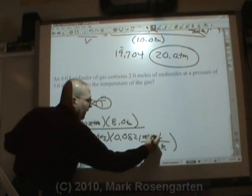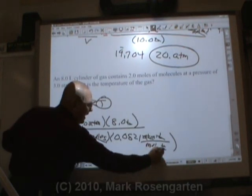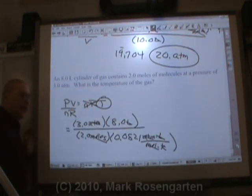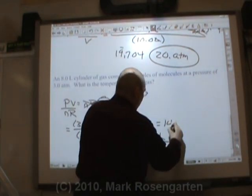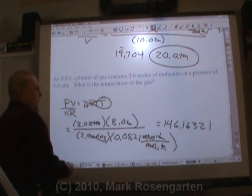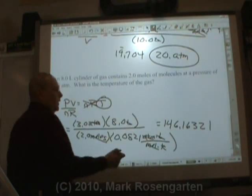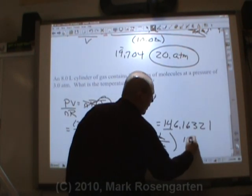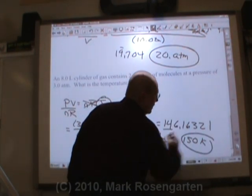Atmospheres, gone. Liters, gone. Moles, gone. That'll leave us with kelvin when we're done. Equals 146.16321. Two sig figs, two sig figs, two sig figs. 150 kelvin.